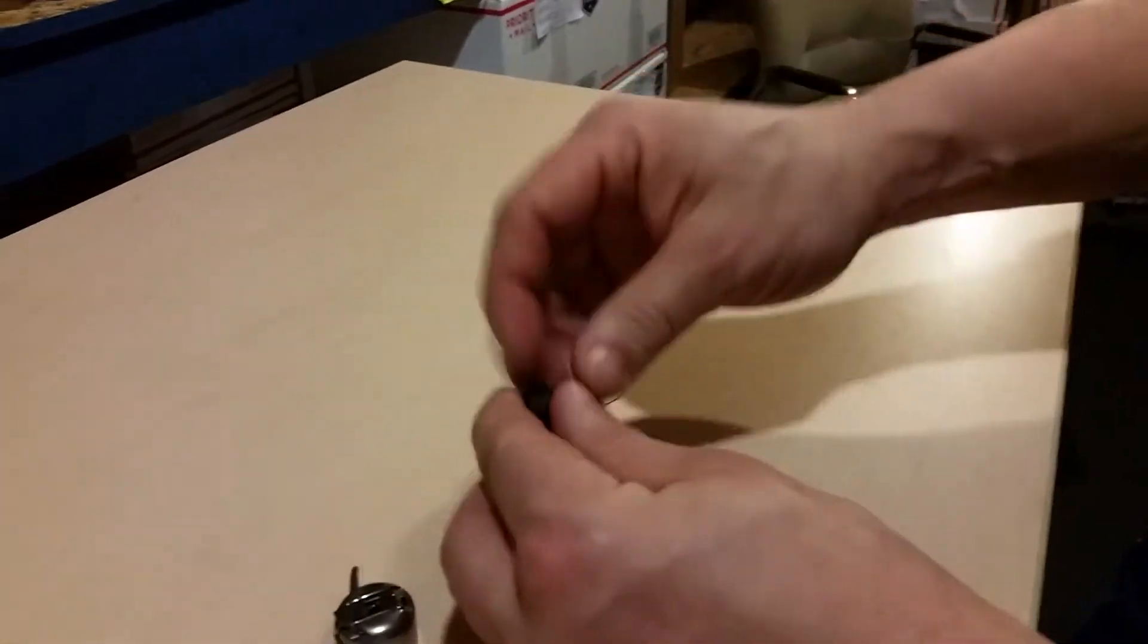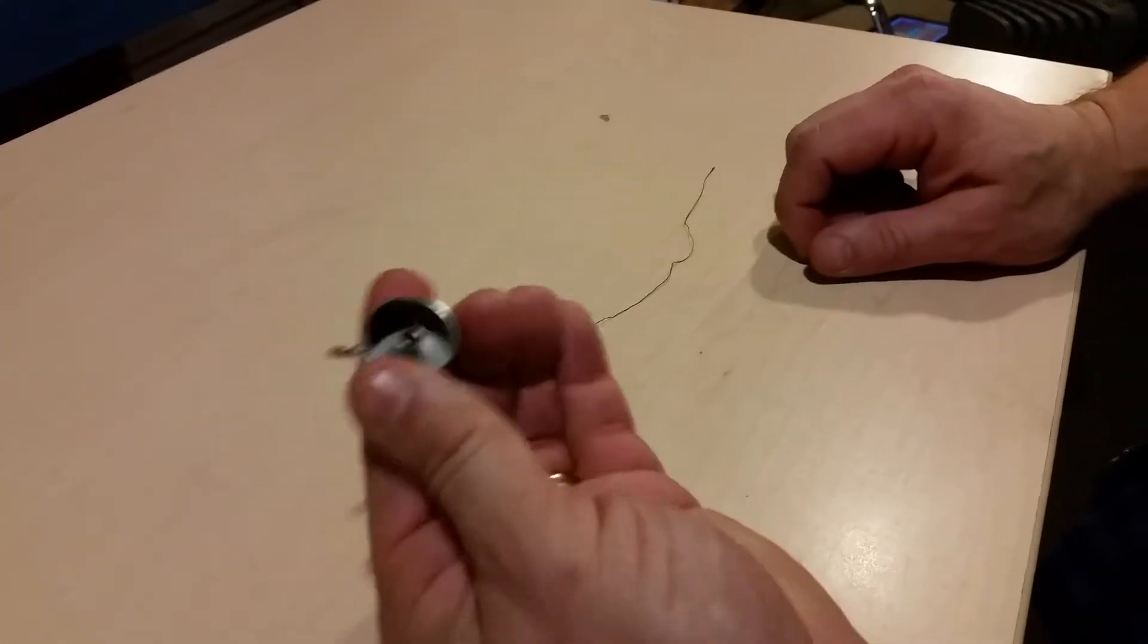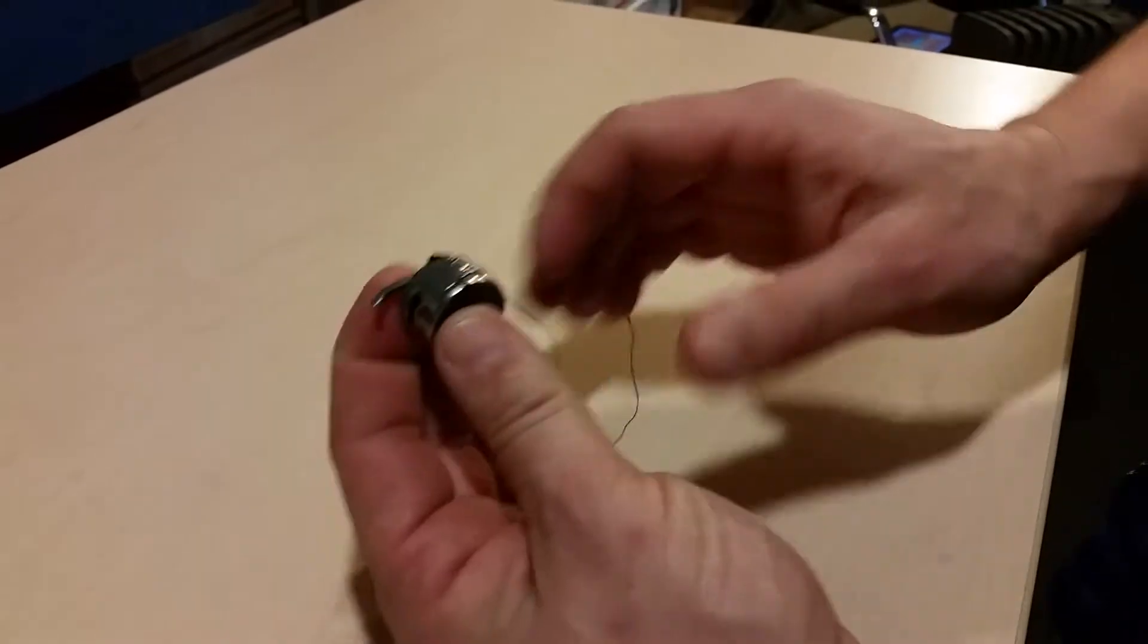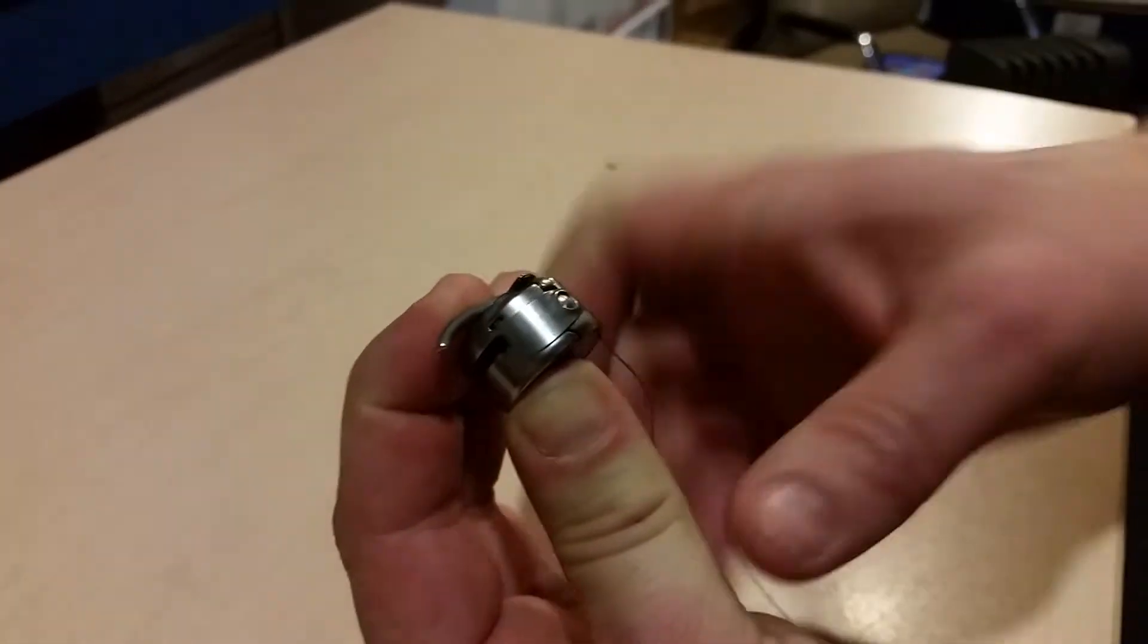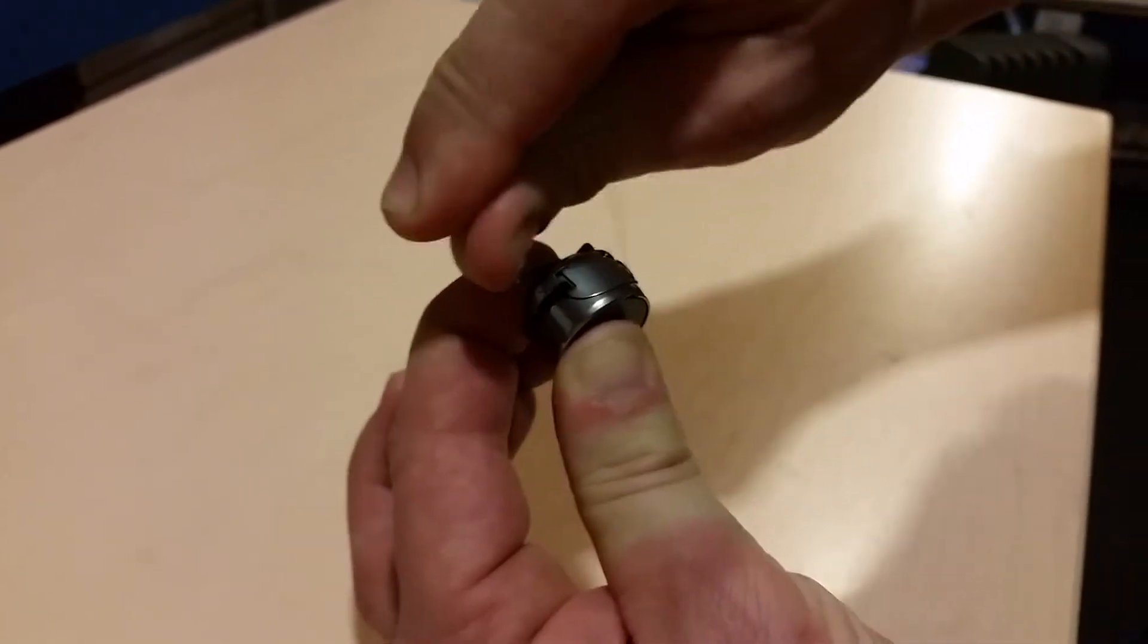We've got our bobbin case, our thread, we want to be going to the right and over the top. We're going to pick it up, turn it around, put it inside the case. We're finding that groove, holding it tight and it's going to pull through.